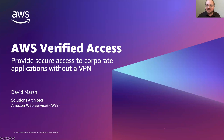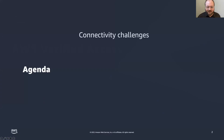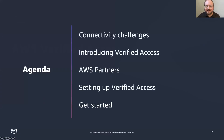Let me jump to the agenda and give you a quick overview of what we're going to do here. First, we're going to talk about some of the challenges with connectivity that we see with our customers. Then I'm going to talk about how AWS Verified Access, our new service for Zero Trust access to applications, is going to help solve some of those challenges. Then we'll talk about some partners that integrate here, some steps to set up, and some getting started links and resources.